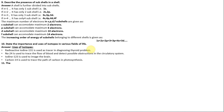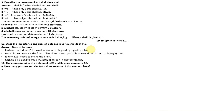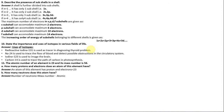Question 11: The atomic number of an element is 23 and its mass number is 56. The number of protons and electrons is 23. The number of neutrons is mass number minus atomic number: 56 minus 23 equals 33.